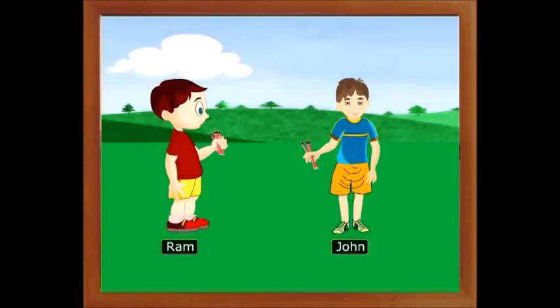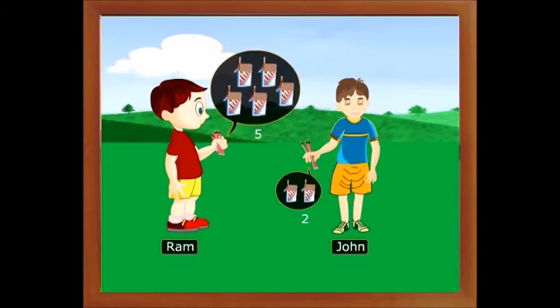Now let us see what would be the equivalent ratio if Ram and John make a packet of six pencils each. John has two packets and Ram has five packets. So the equivalent ratio is 2 is to 5.